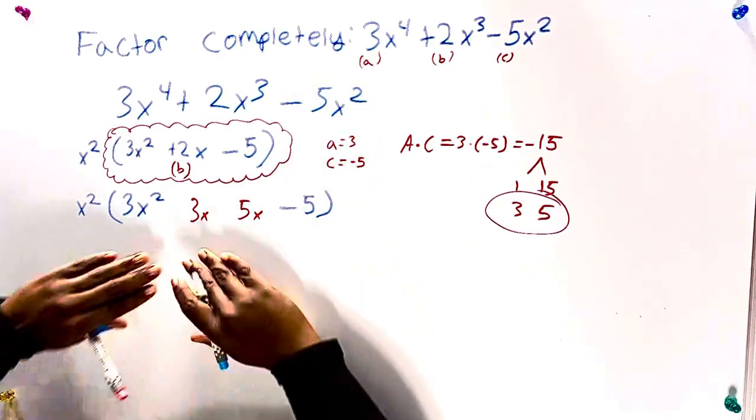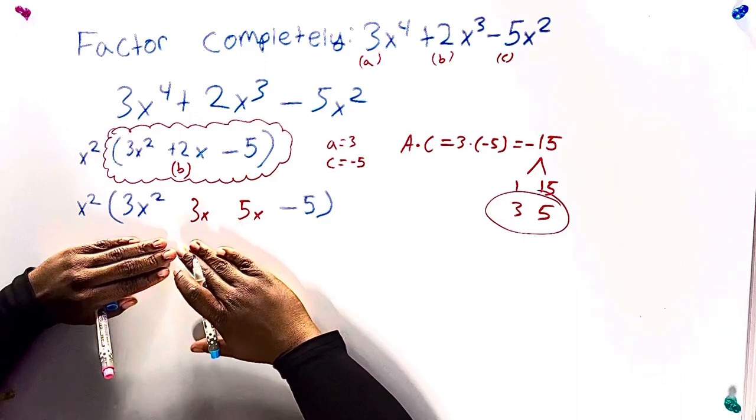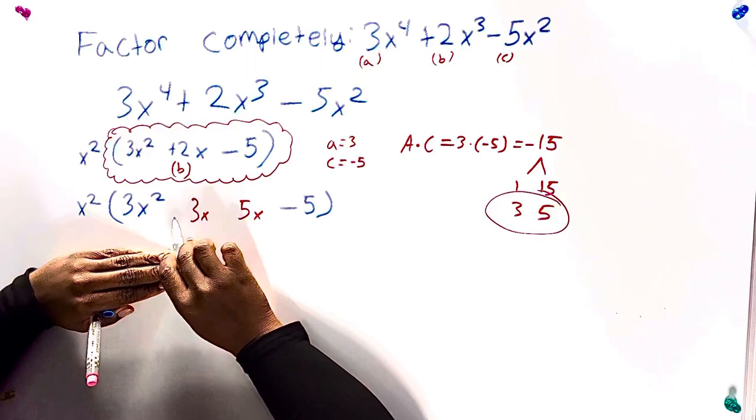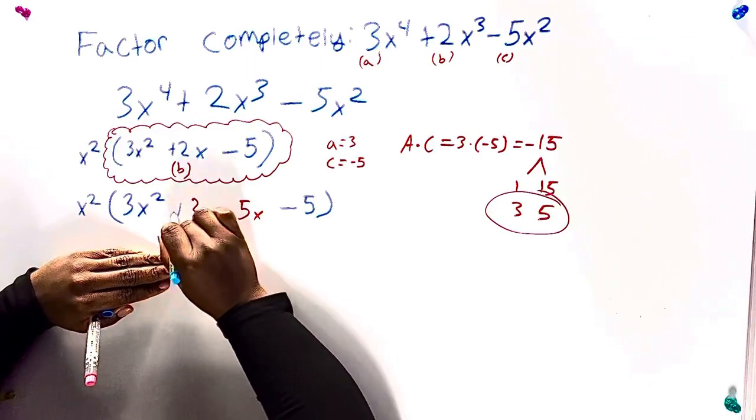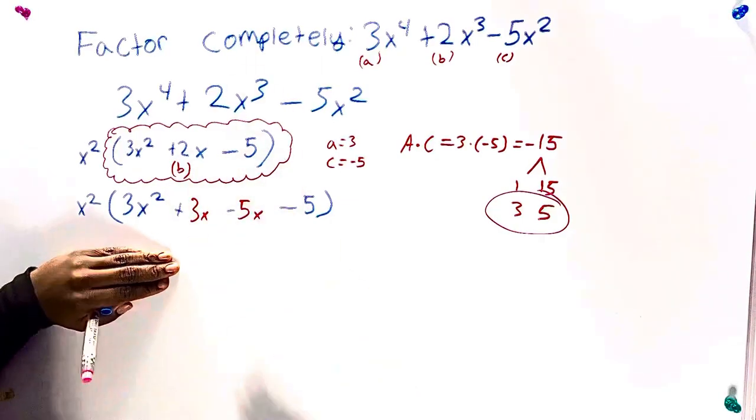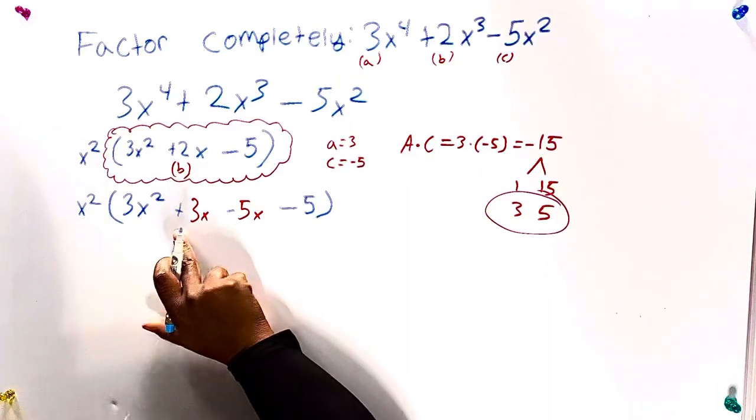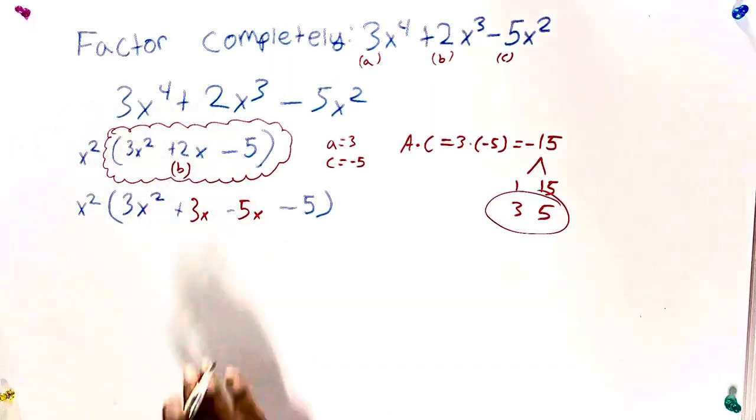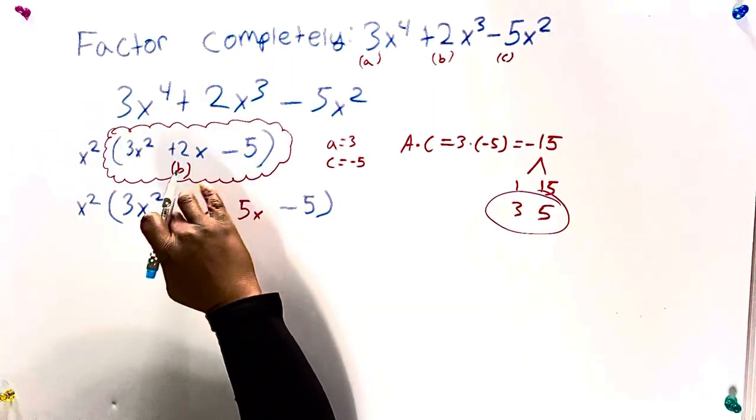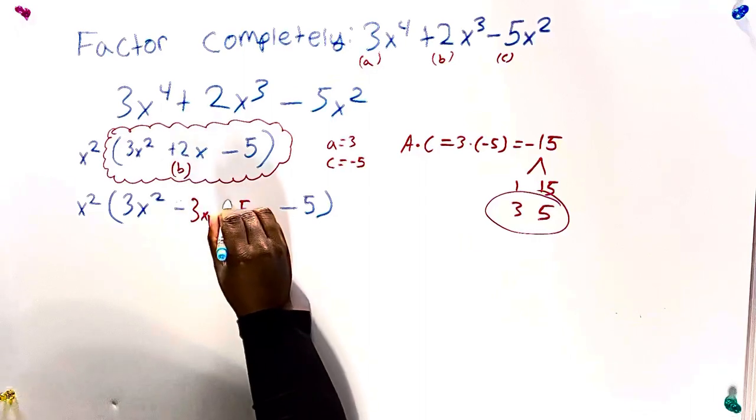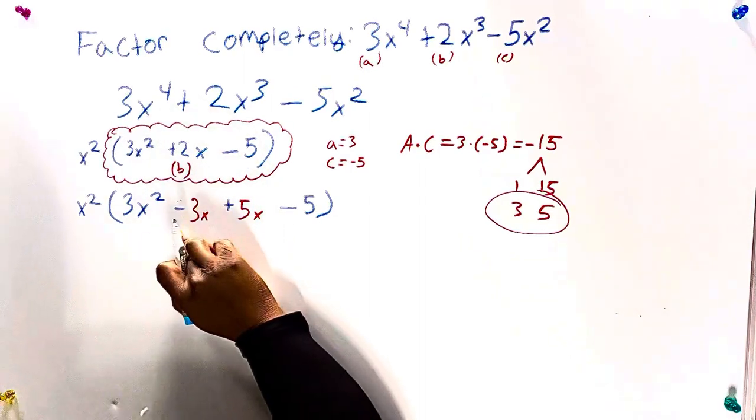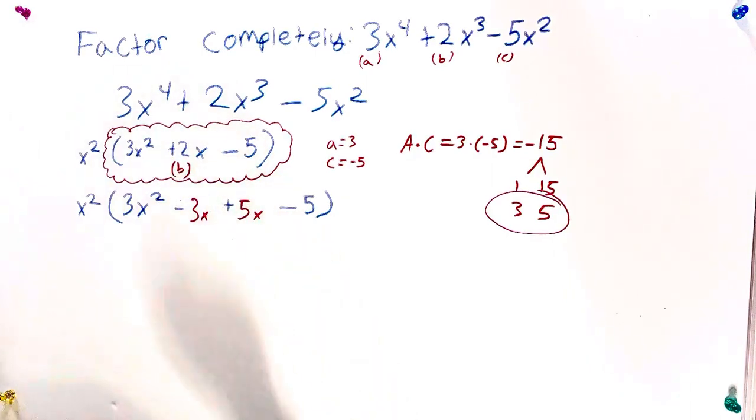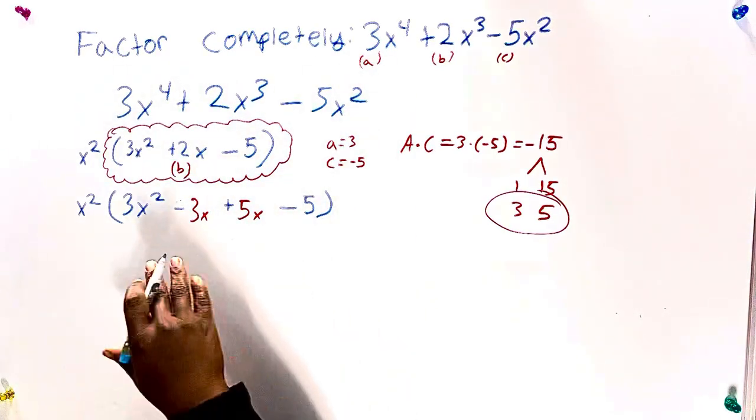So now we have to figure out, okay, which is positive, which is negative. So if we have, let's say we put plus 3x, right? And then we put minus 5x. 3x minus 5x will give us negative 2x. Do we have a negative 2x? No. So that doesn't work. So now we can do, let's see, negative and plus. So now we have a negative 3x and a positive 5x. This will give us a positive 2x. That works. So we can use that.